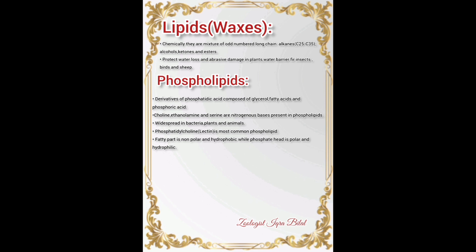Phospholipids are derivatives of phosphatidic acid, composed of glycerol, fatty acids, and phosphoric acid. Choline, ethanolamine, and serine are nitrogenous bases present in phospholipids, which are widespread in bacteria, plants, and animals. Phosphatidylcholine (lecithin) is the most common phospholipid. The fatty part is non-polar and hydrophobic, while the phosphate head is polar and hydrophilic.